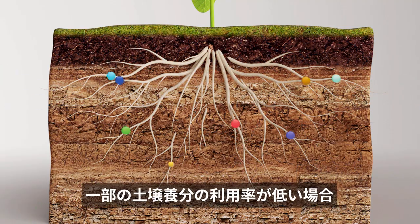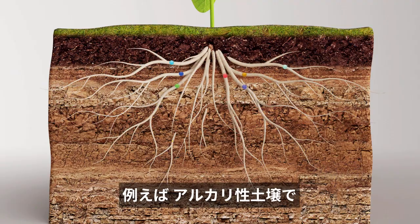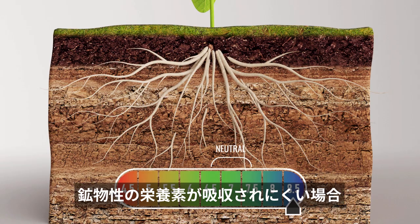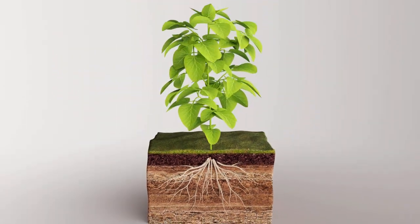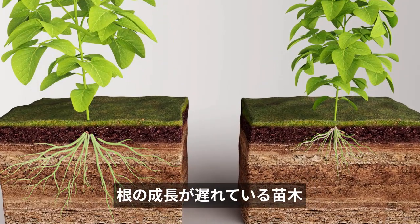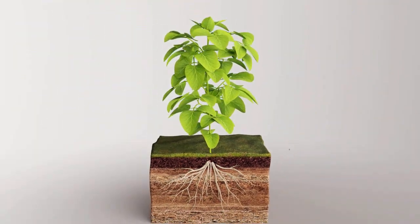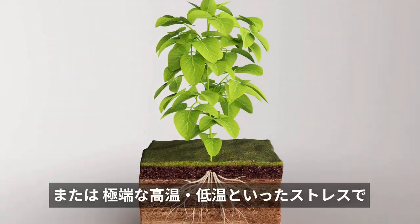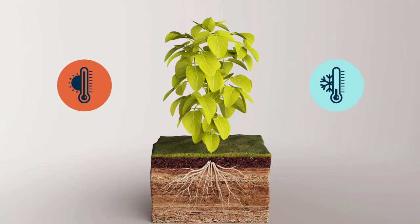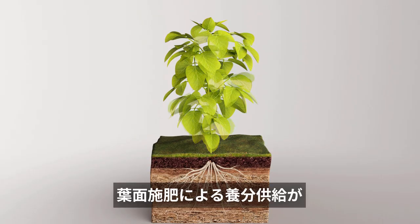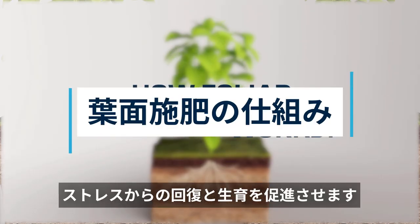When availability of soil nutrients is low — for example when soil is alkaline and metal mineral nutrients are hard for plants to extract — with very young trees when their root growth is lagging behind canopy development, when pests and diseases may damage plant tissues, or in periods of extreme heat and cold which can stress plants and stunt their growth. In all these cases, foliar nutrition will accelerate recovery and productivity from the stress.